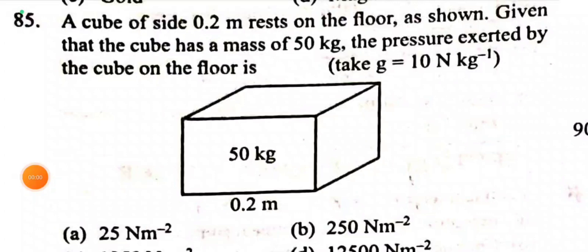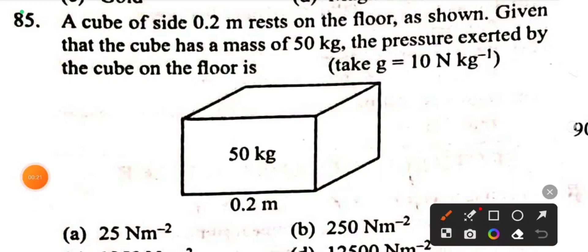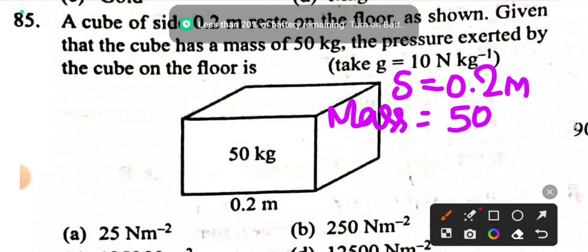Question 85: A cube of side 0.2 meter rests on the floor as shown. Given that the cube has a mass of 50 kg, the pressure exerted by the cube on the floor is? Given here, the side of the cube is 0.2 meter. The mass of the cube is 50 kg.